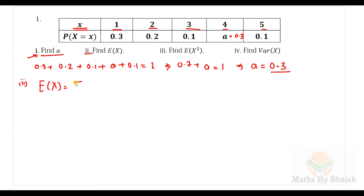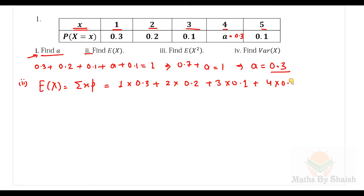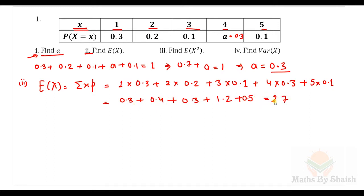Next, find the expectation E(X). We know E(X) is the summation of each value multiplied by its corresponding probability. So: (1 × 0.3) + (2 × 0.2) + (3 × 0.1) + (4 × a) + (5 × 0.1). Calculating: 0.3 + 0.4 + 0.3 + 1.2 + 0.5 = 2.7. So the expected value E(X) = 2.7.